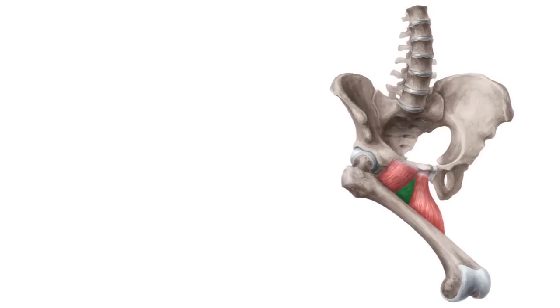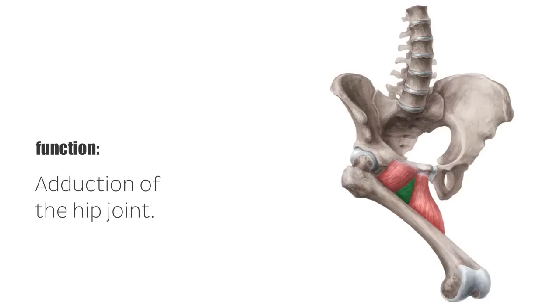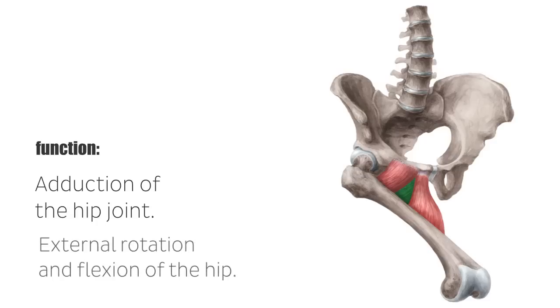As the name suggests, the main function of the hip adductors is the adduction of the hip joint. Furthermore, the adductor brevis supports the external rotation and flexion of the hip.